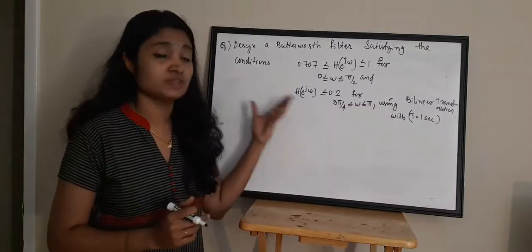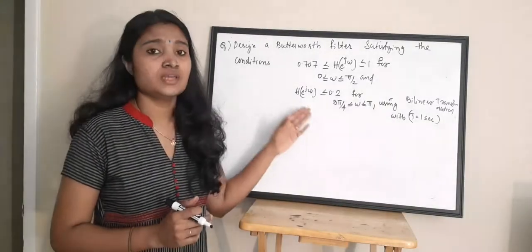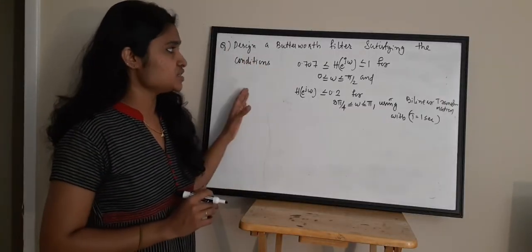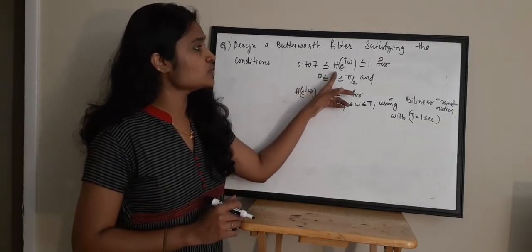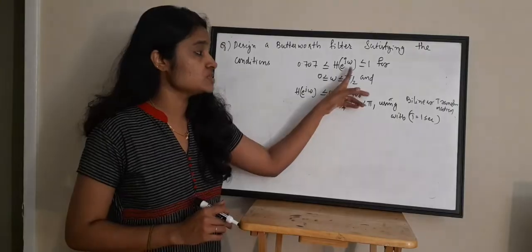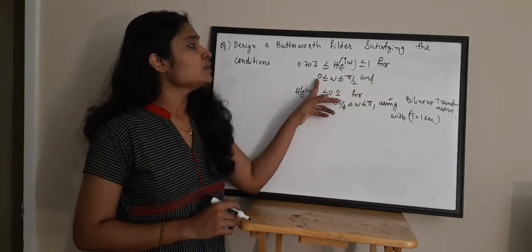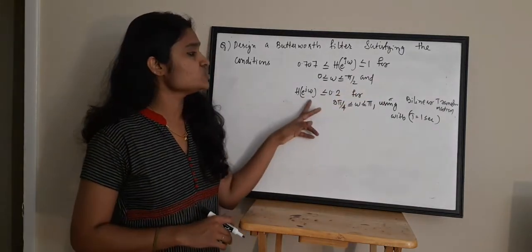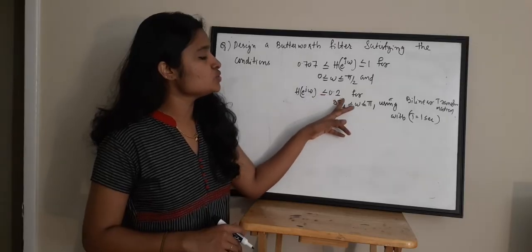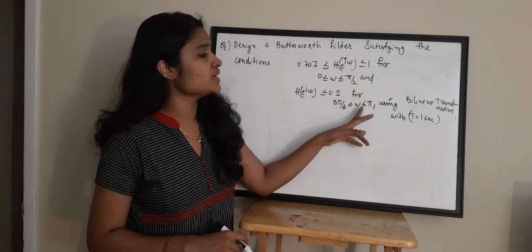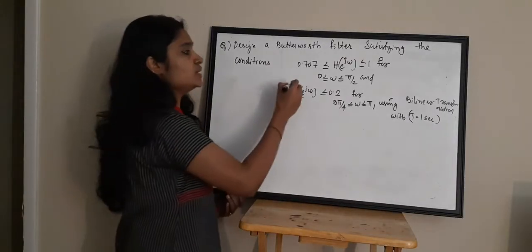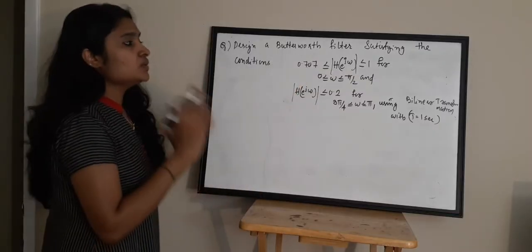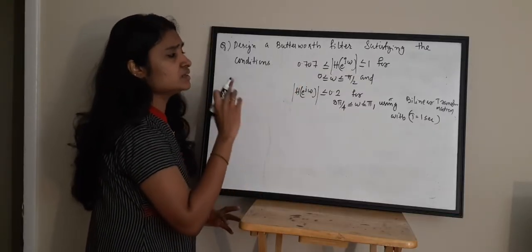So in this part we are going to see how to draw the magnitude response of your Butterworth filter satisfying given conditions. It is given in the question: design a Butterworth filter satisfying 0.707 ≤ |H(e^jω)| ≤ 1 for 0 ≤ ω ≤ π/2, and |H(e^jω)| ≤ 0.2 for 3π/4 ≤ ω ≤ π. These are magnitude response values — more or less values — and there are two conditions given.